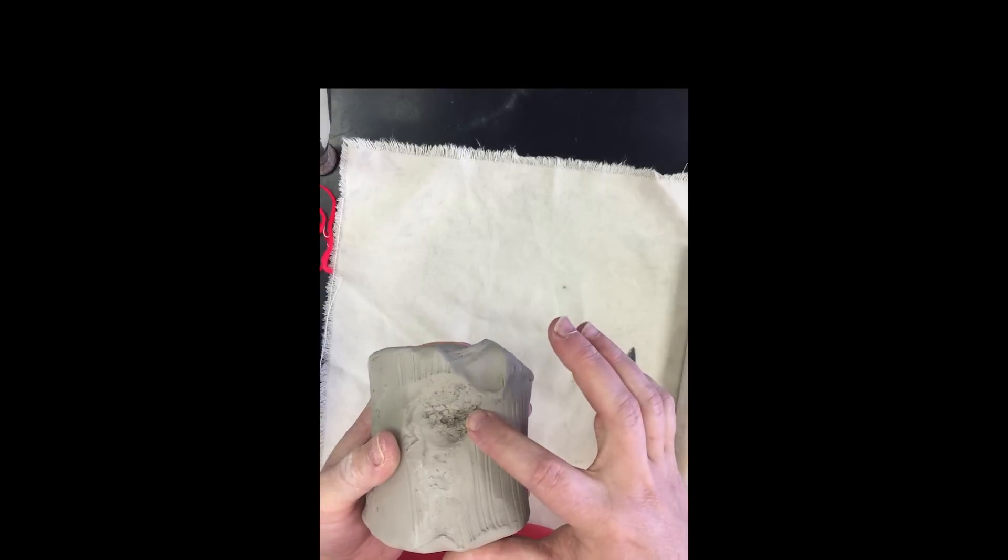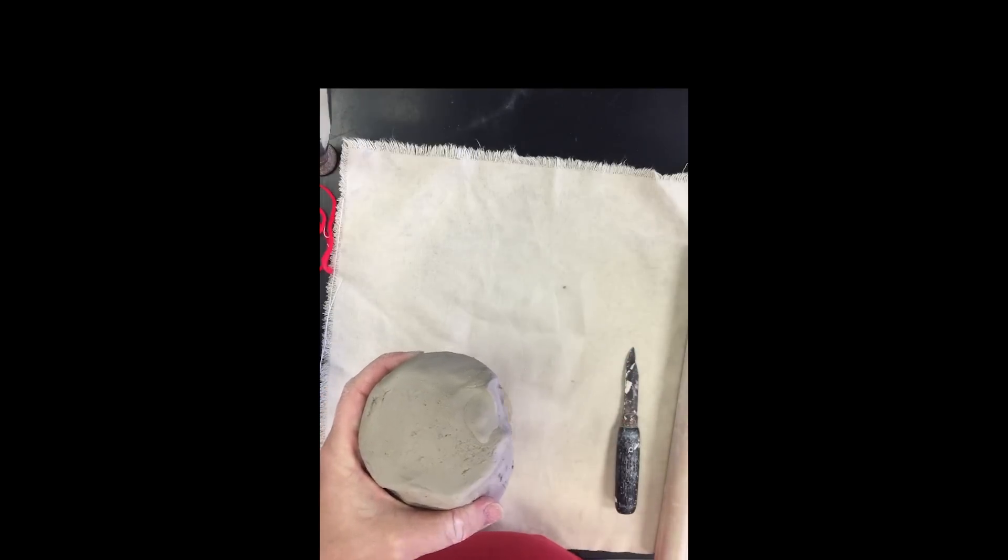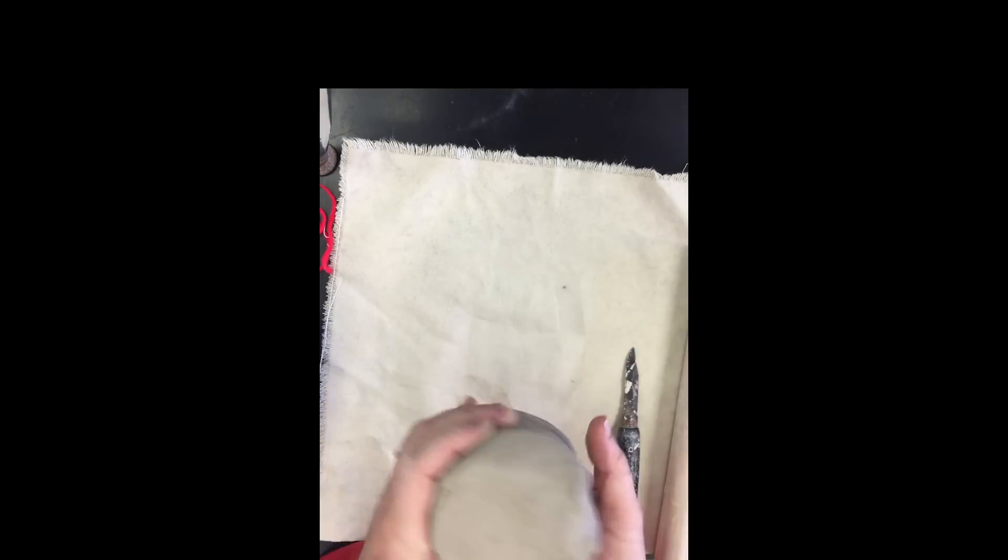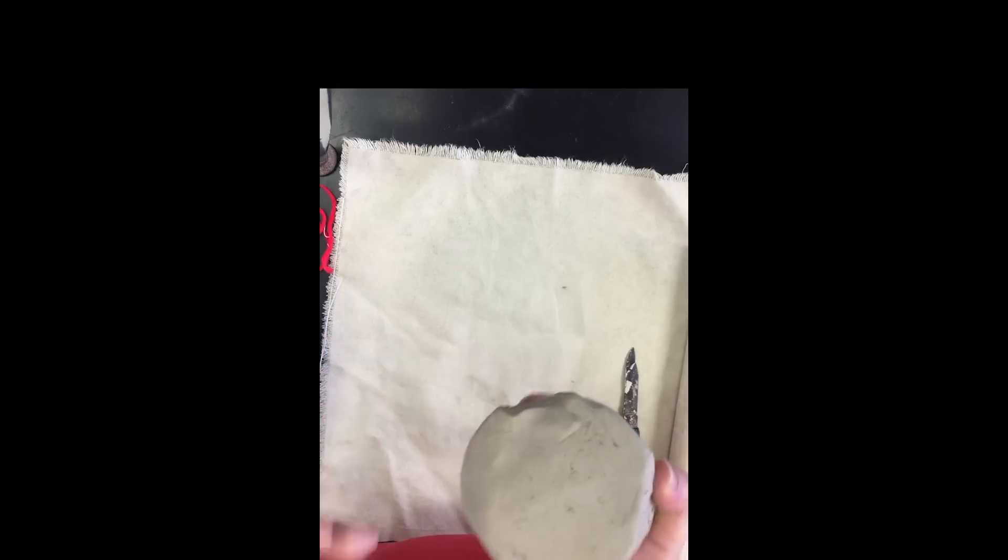This has been pugged, which means that it has all the air pockets out of it. If you get a piece of clay that's like this or sometimes it might be a little bit bigger but still flat on the top and bottom, that's brand new clay. Just use it, you don't have to do anything to it.